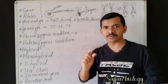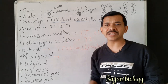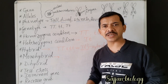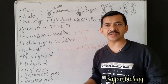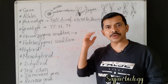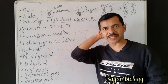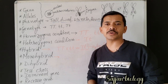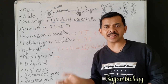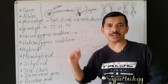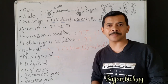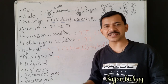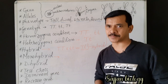We express genotype using symbols like capital T, capital T (TT), small t small t (tt), or capital T small t (Tt). Capital T capital T (TT) expresses tallness, while small t small t (tt) expresses dwarfness.